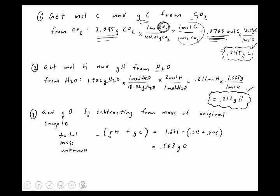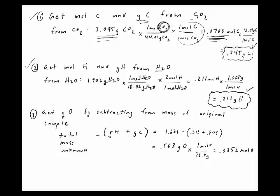If you try to determine oxygen directly from CO₂ or H₂O, it will be incorrect because the oxygen in those products came from both the unknown compound and the reactant oxygen. Now convert 0.563 grams of oxygen to moles: 0.563 g ÷ 16.00 g/mol = 0.0352 moles of oxygen.